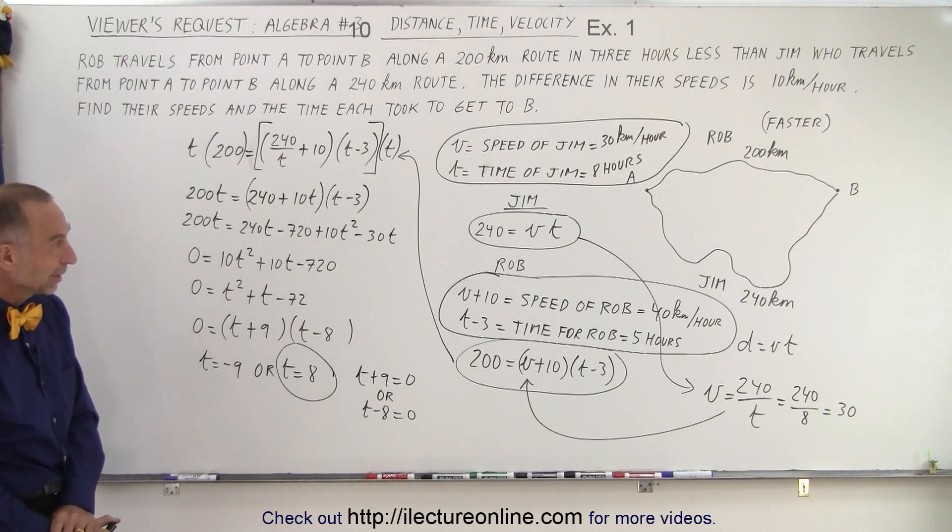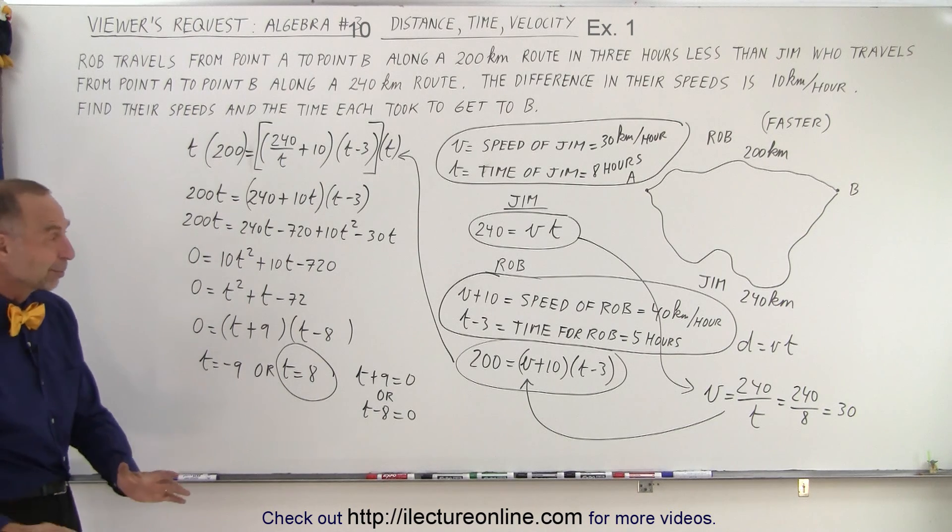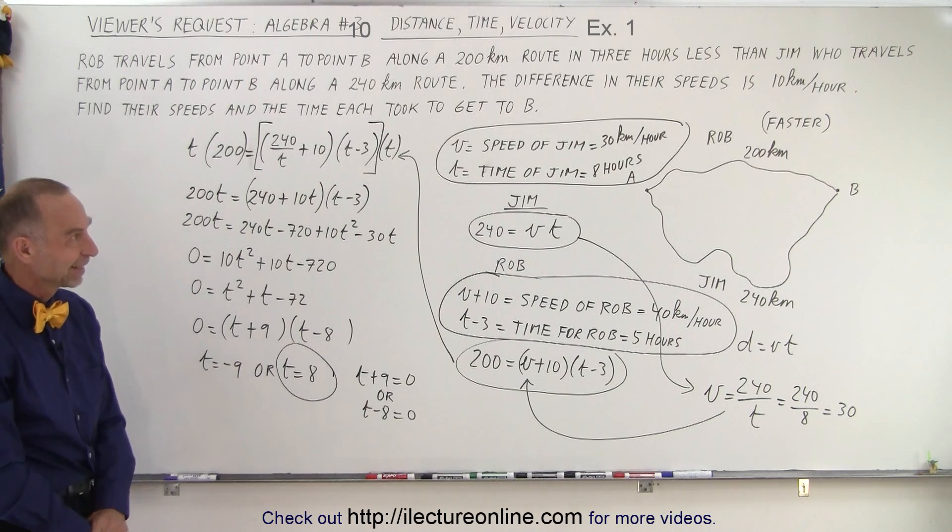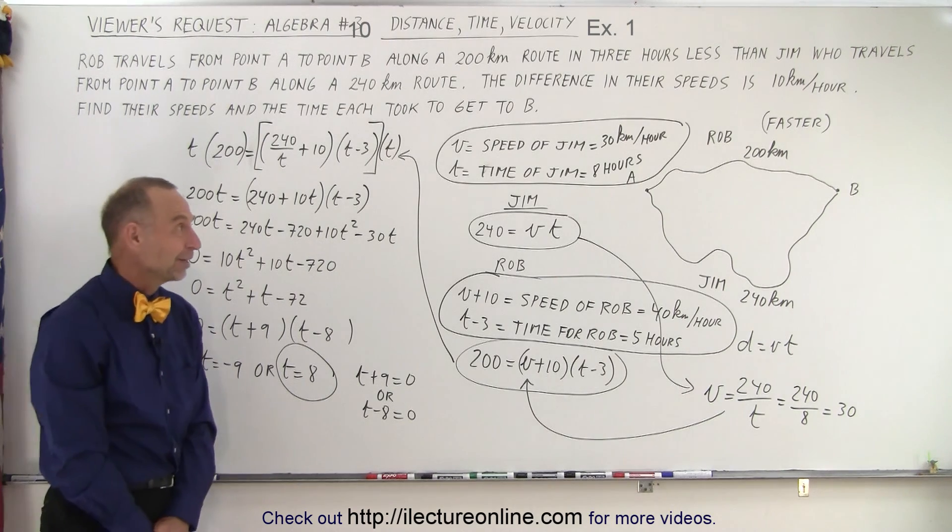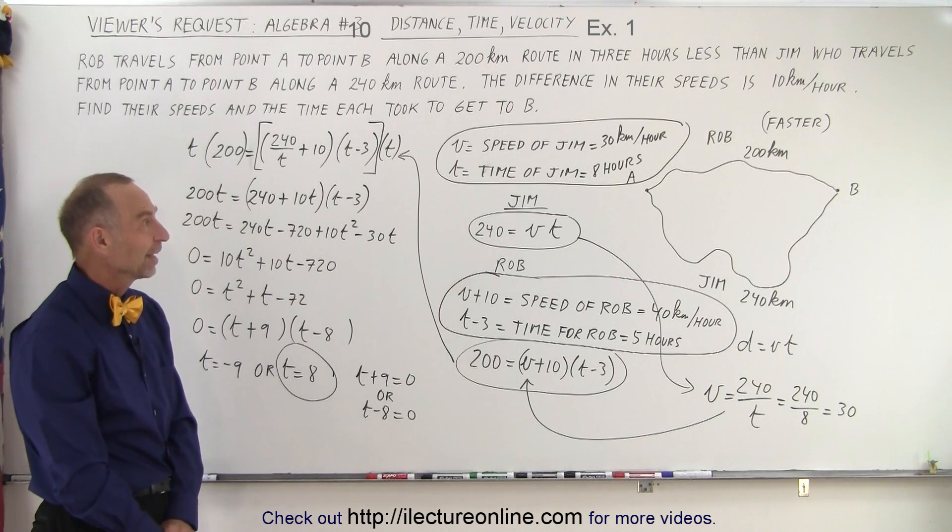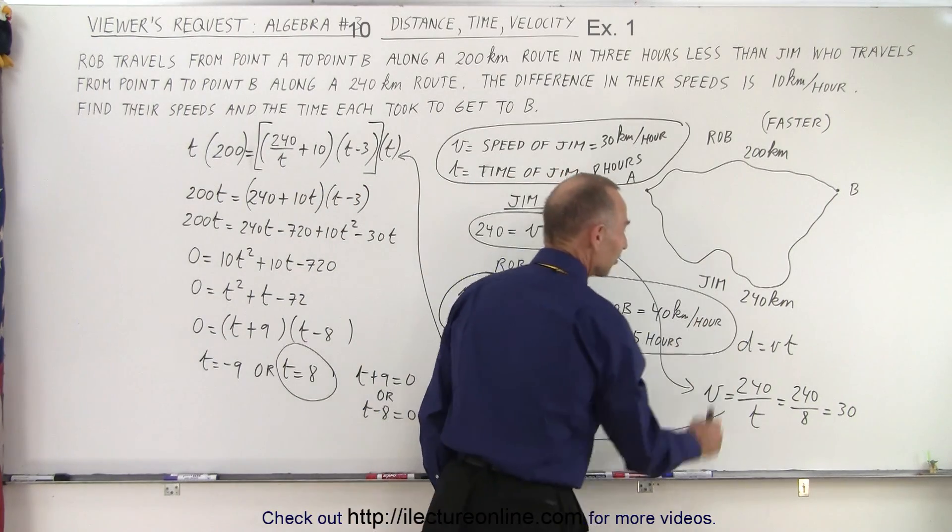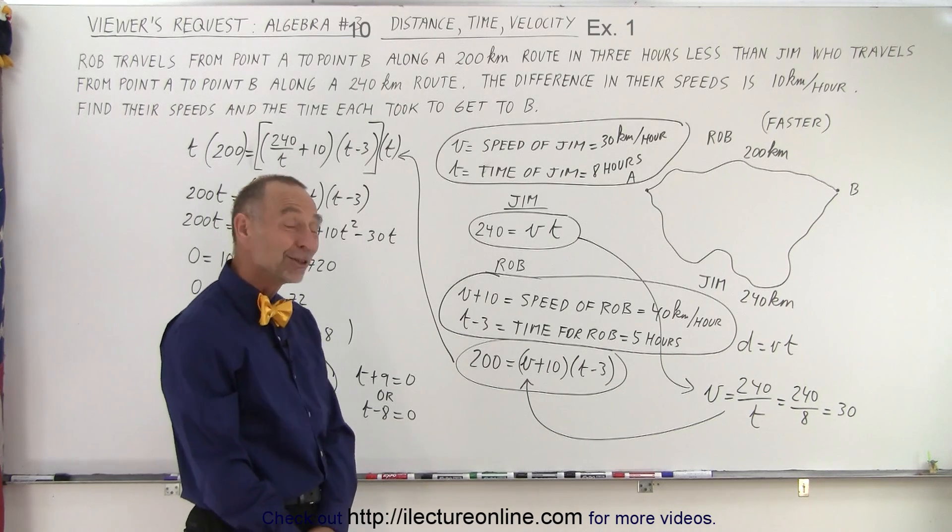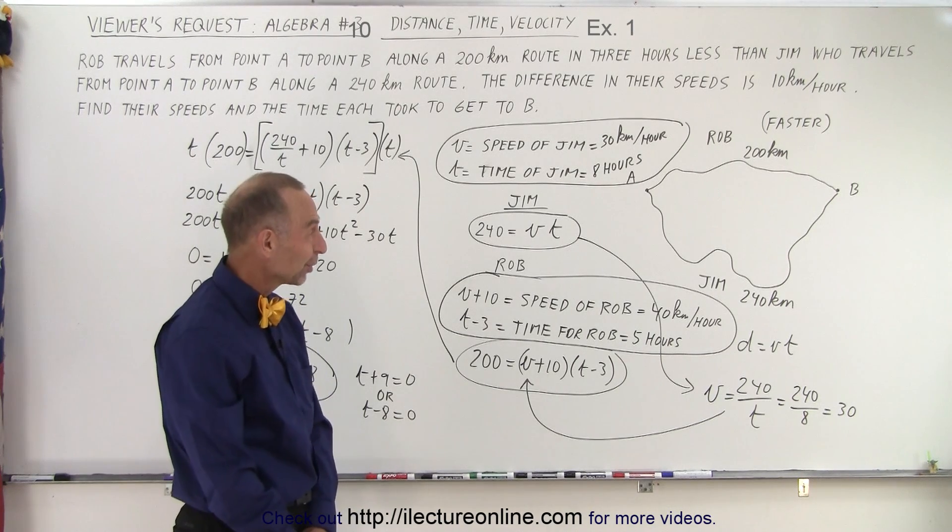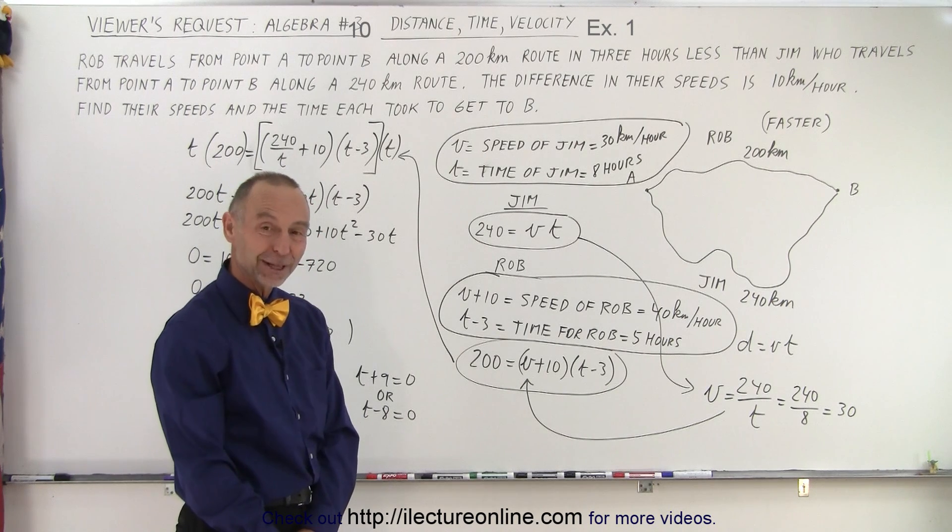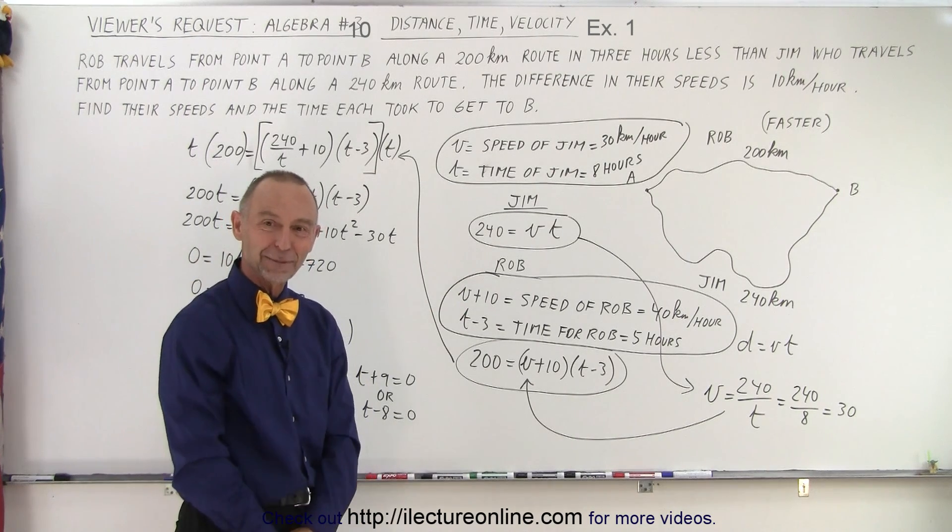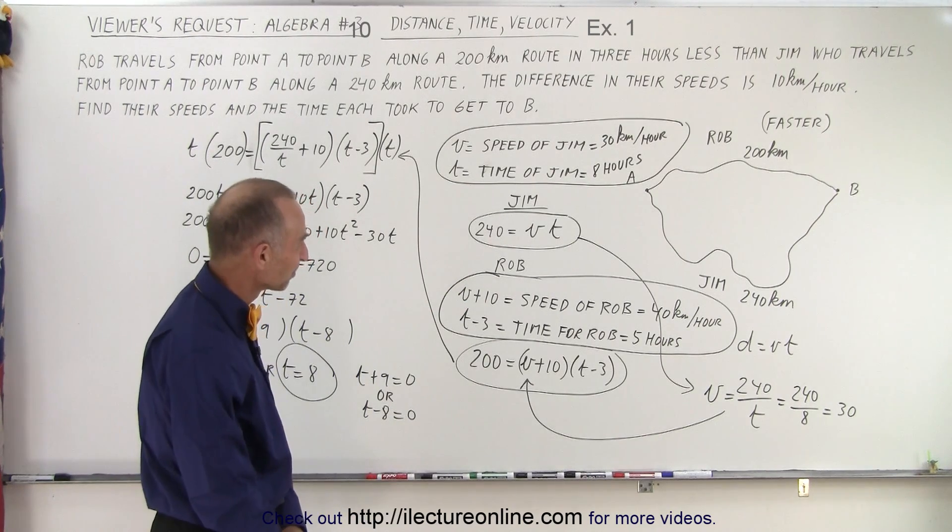So it is indeed a very interesting problem but it can be done by setting up the two equations and that is how it's done. What happens if you don't assume that Rob is traveling faster? That's a really good question. What if we made the wrong assumption and thought that Jim was faster? Should I try to do it that way and see what happens? Let's try it. Let's say we make the other assumption and see what would happen. I think that's a good idea. All right, let's do that.